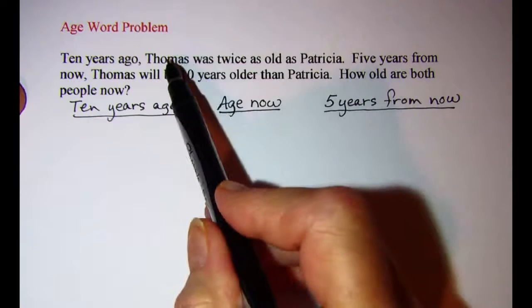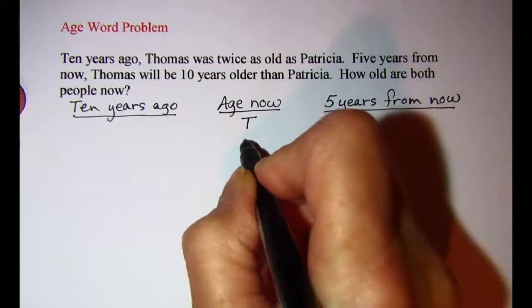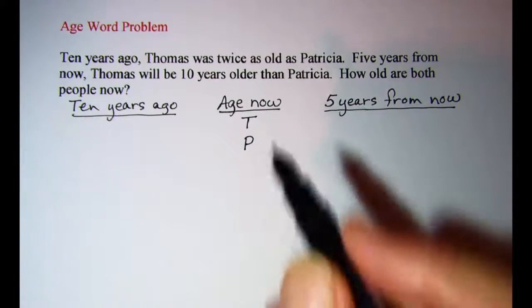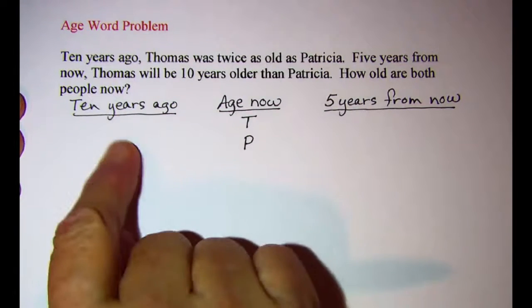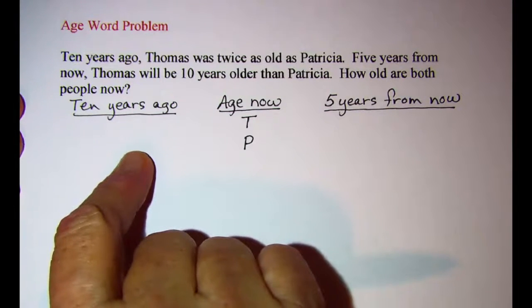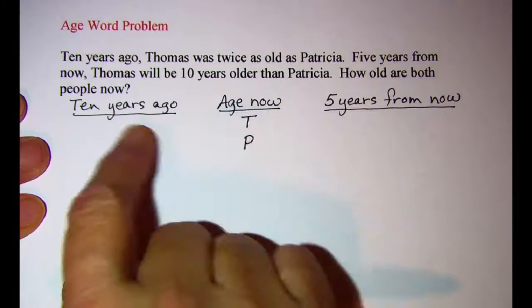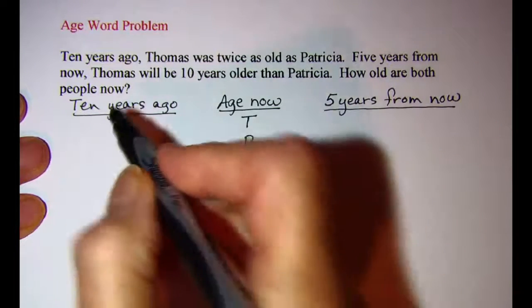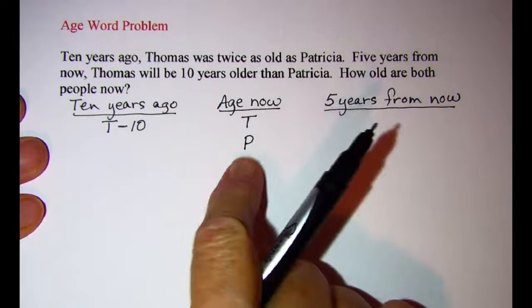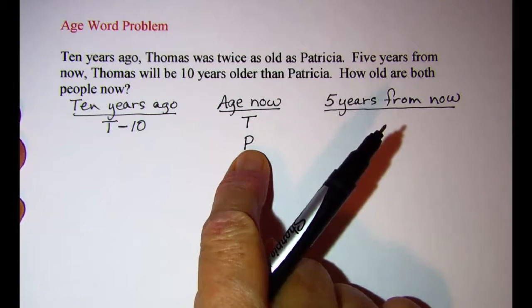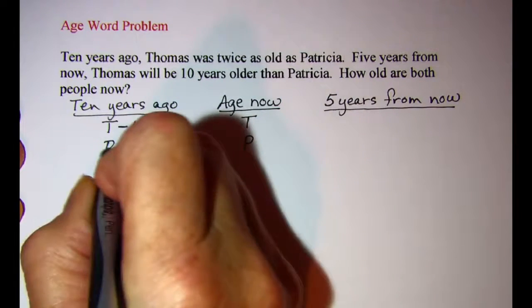Now I'm going to use T and P as the variables. My first sentence talks about ten years ago, so I'm going to fill in my variables for ten years ago. If Thomas is T years old now, ten years ago he would have been T minus 10. And P is Patricia's age now, so ten years ago Patricia would have been P minus 10.